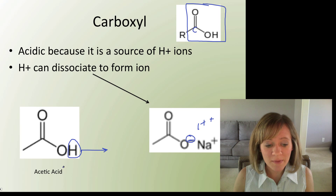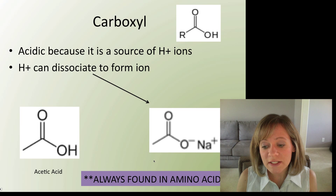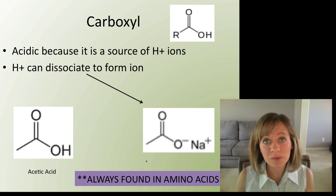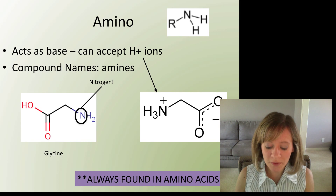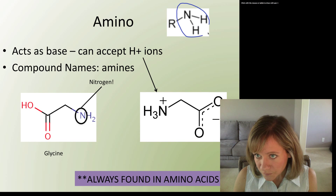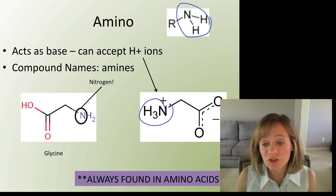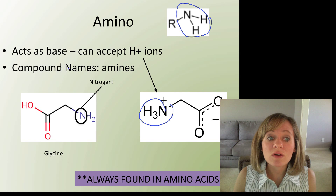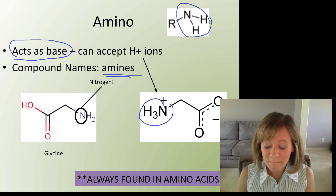Carboxyl is one of two functional groups always found in amino acids. The other is the amino group — a nitrogen with two hydrogens coming off of it, or sometimes with three hydrogens and a positive charge. These are always bases because they can accept an extra hydrogen. We call these the amines.